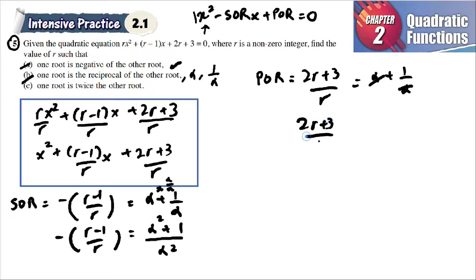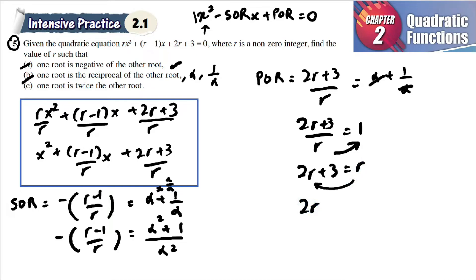Setting (2r+3)/r = 1, multiply both sides by r to get 2r + 3 = r. Bringing r to one side: 2r − r = −3, so r = −3.